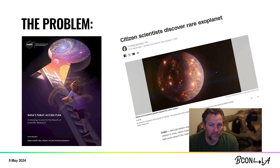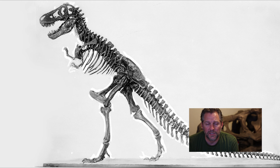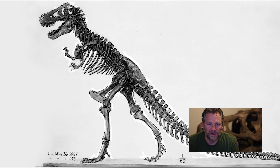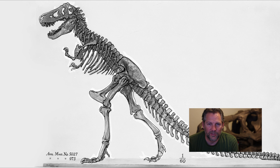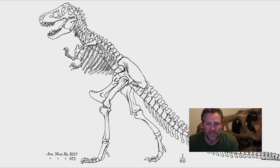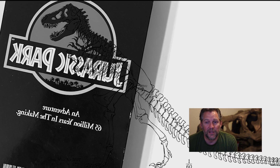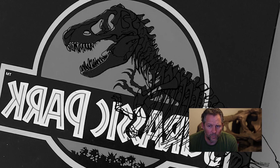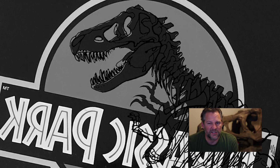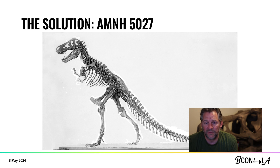Fortunately, I was able to find a loophole. This is AMNH 5027. Although this mount was updated in the 1990s, you'll probably recognize the old posture here. It's a very recognizable specimen. You might even recognize it from some popular media. When I was a kid, there were about a dozen known T-Rex specimens. Today there are around 100. AMNH 5027 is unique and, to me, special because it was the first T-Rex specimen that really gave us a good look at this amazing creature.